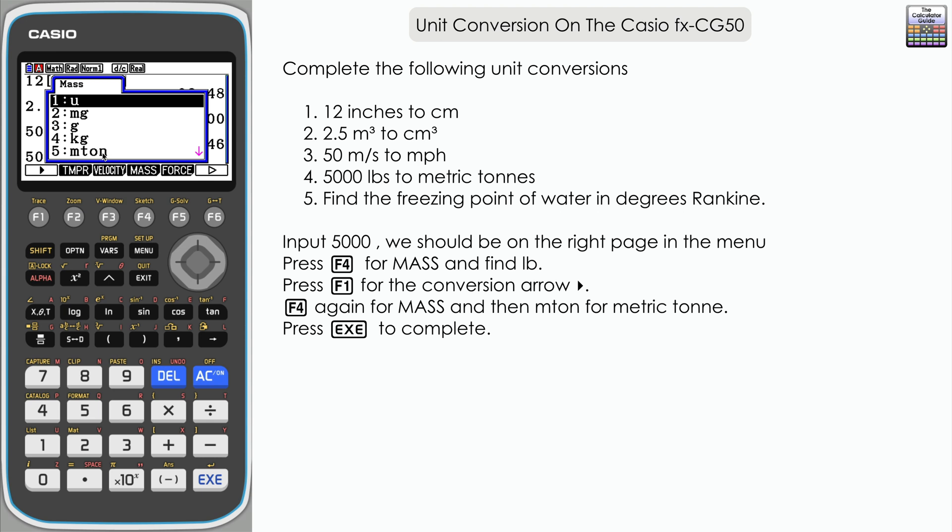So presumably that's standing for metric ton. Notice how we spell ton here. Usually in the UK and throughout Europe it's this T O double N E spelling, but here they've got it as m ton. If you go down a little bit further there are the imperial tons as well, but we want option five here, metric ton, and then execute. We've got our answer here: 2.27 to two decimal places there, metric tons for 5000 pounds.